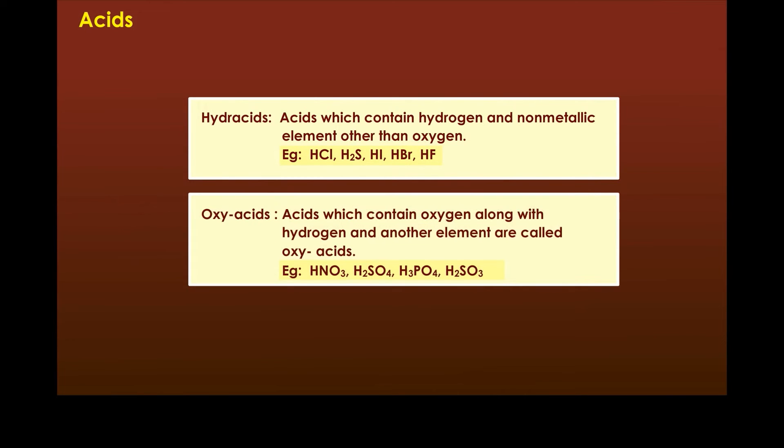Oxy acids: acids which contain oxygen along with hydrogen and another element are called oxy acids. Example: nitric acid HNO3, sulfuric acid H2SO4, phosphoric acid H3PO4, sulfurous acid H2SO3.